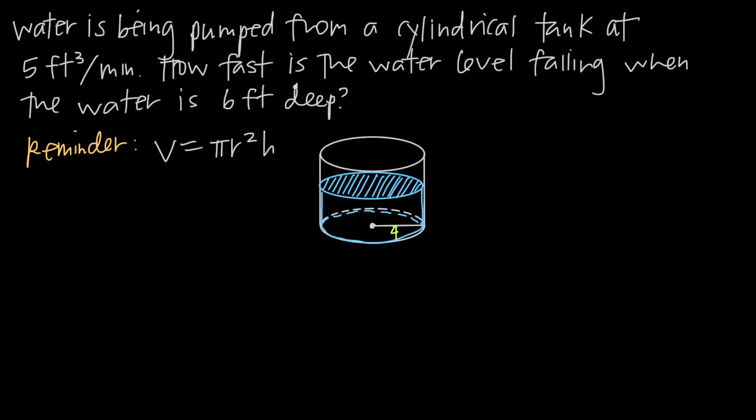With related rates problems, you always have two different values that are changing with respect to a third independent variable. Most often, almost always, that independent variable is time. So you're looking for two things that are both changing with respect to time — in this case, the water volume is changing and the water height is changing.